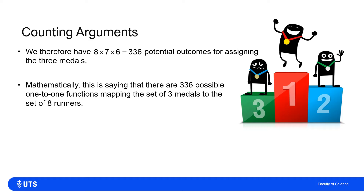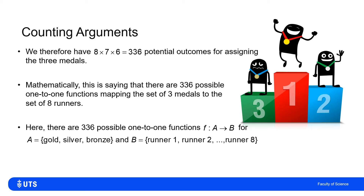We wouldn't normally think of it this way — it would seem like overcomplicating it. But this is because there are 336 possible one-to-one functions mapping the set of three medals {gold, silver, bronze} to the set of eight runners. So we have 336 possible one-to-one functions F which map set A to set B, where set A is {gold, silver, bronze} and set B is {runner one, runner two, ..., runner eight}.